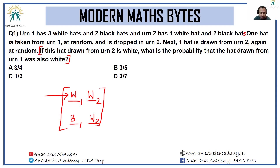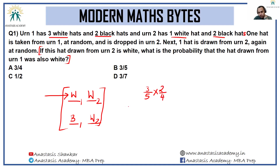White from the first urn: urn one has three white and two black, so the probability is 3/5. White from the second urn: if one white has gone into urn two, you now have two white and two black there, so taking out one white hat from urn two will be 2/4. This is the favorable case divided by the total number of cases.